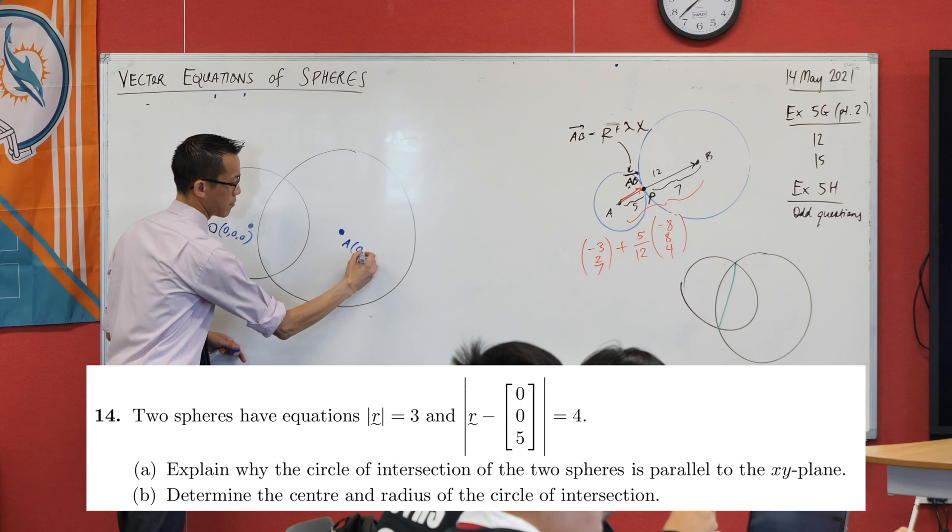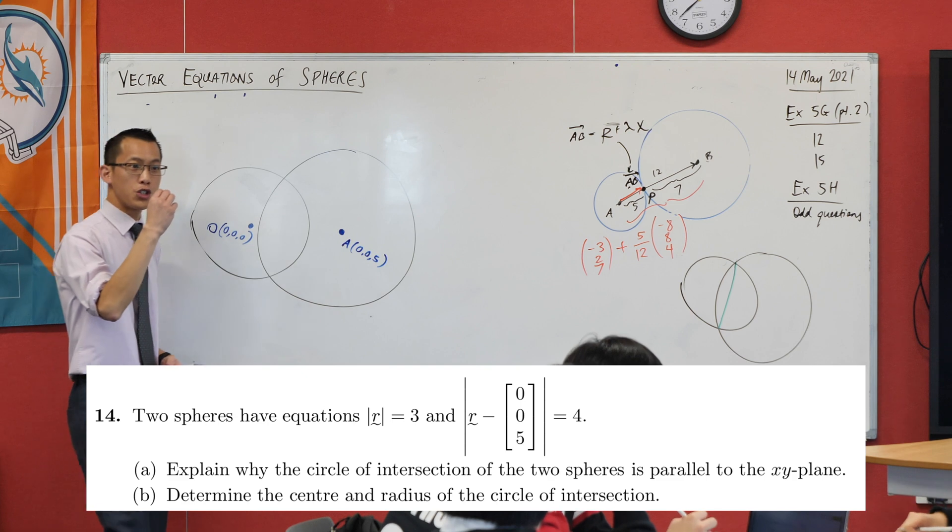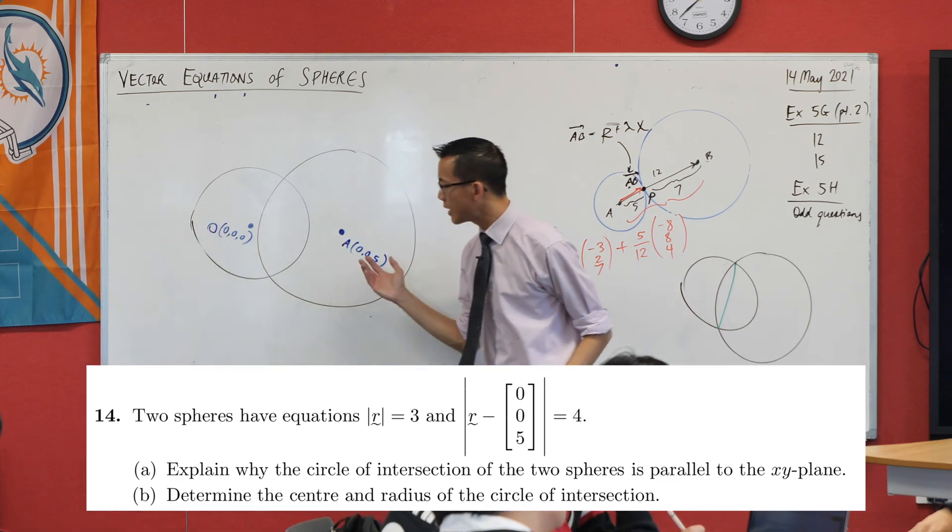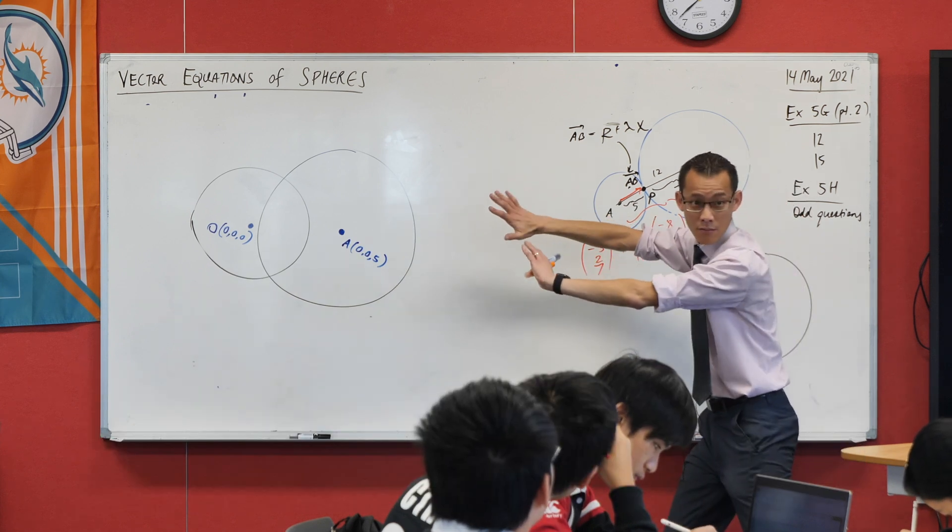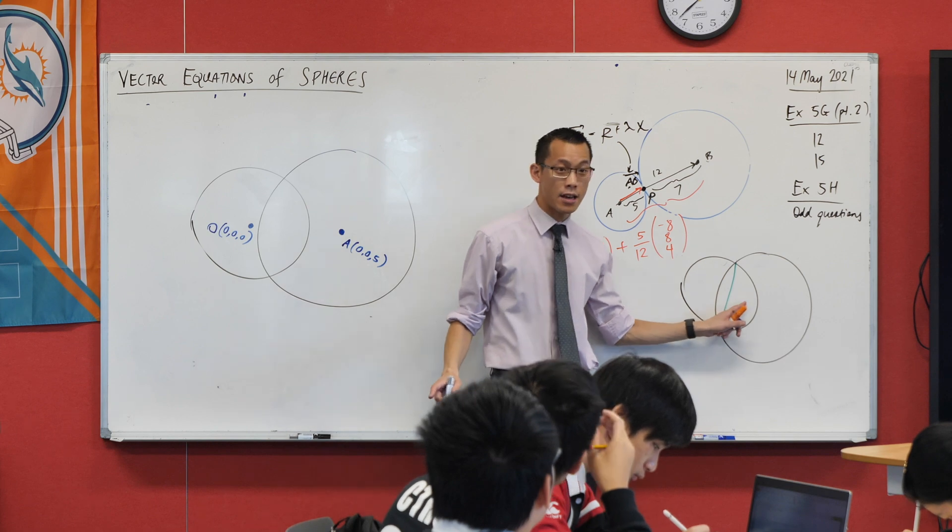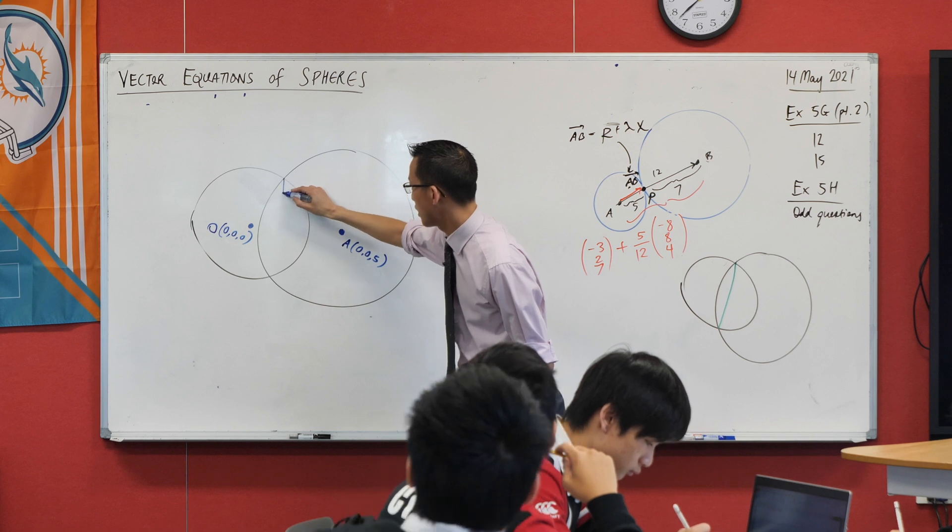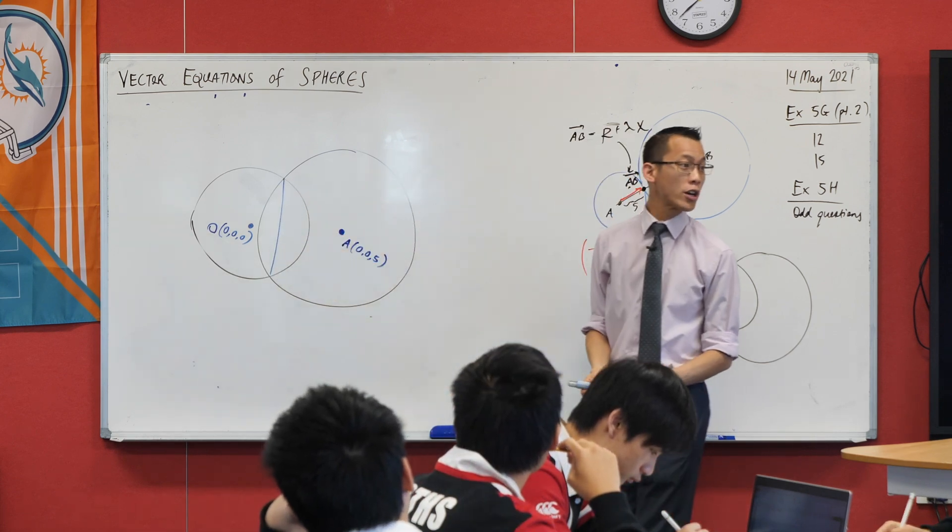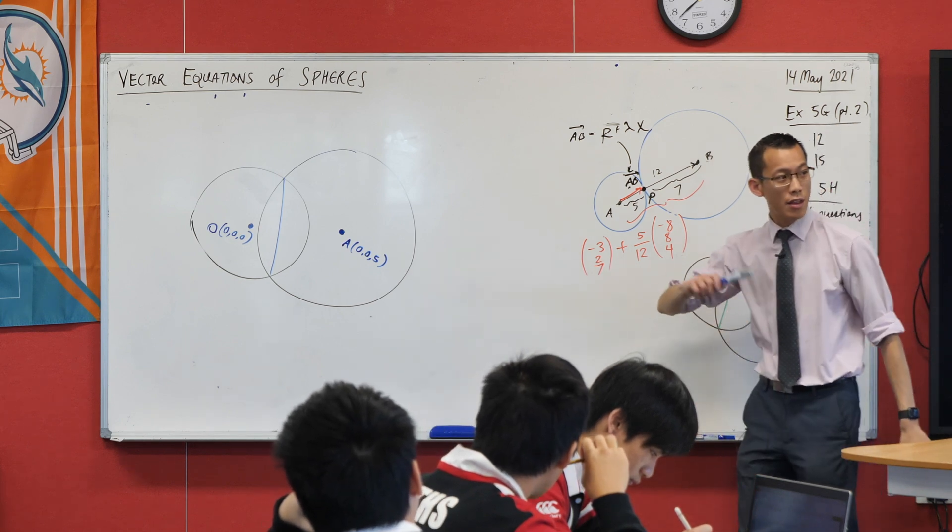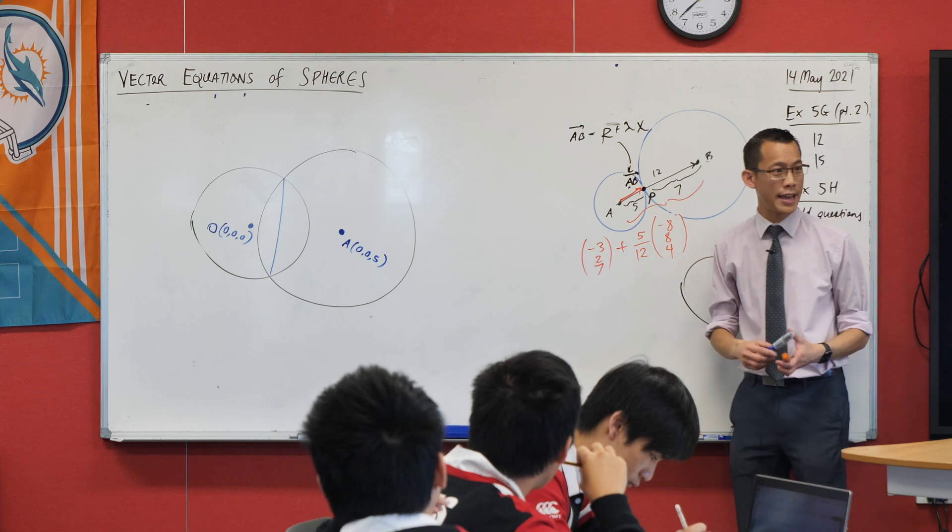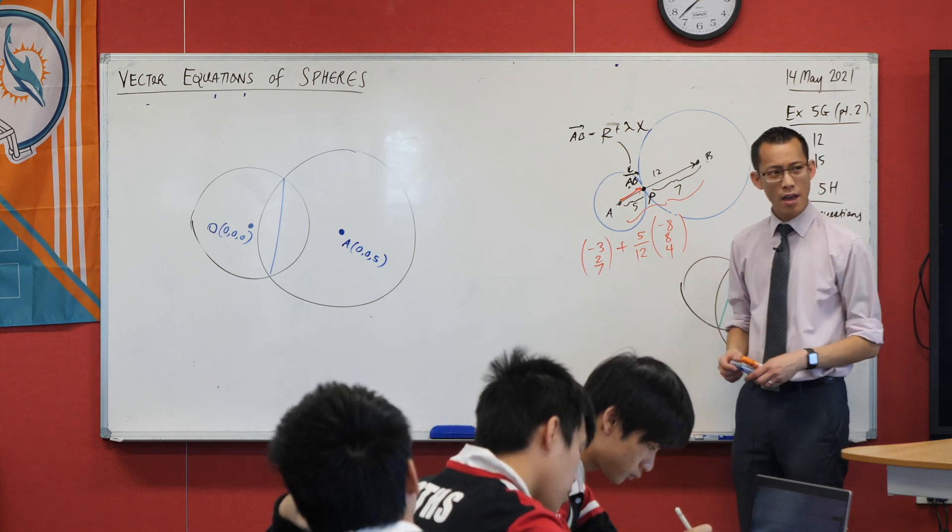Now I'm trying to show that the circle of intersection, which on here, where is this circle of intersection? I'm looking at it in cross-section. It's like you're looking onto it side on. There's my circle of intersection. It's just infinitesimally thin because I'm looking at it side on.